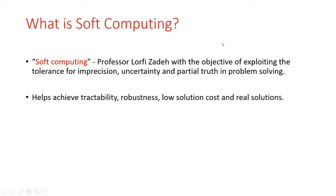The objective of soft computing is exploiting the tolerance of imprecision, uncertainty, and partial truth in problem solving. Based on soft computing, different techniques are used — that is neural network, fuzzy logic, and genetic algorithm — for solving different types of problems. Soft computing helps to achieve tractability, robustness, low solution cost, and real solutions.